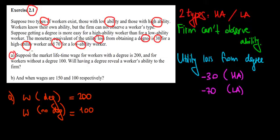What do we have in part A? Suppose that the wage for workers with a degree is 200 dollars, and for workers without a degree is 100 dollars. Will the degree reveal the worker's ability to the firm?